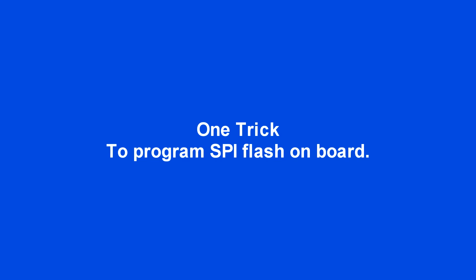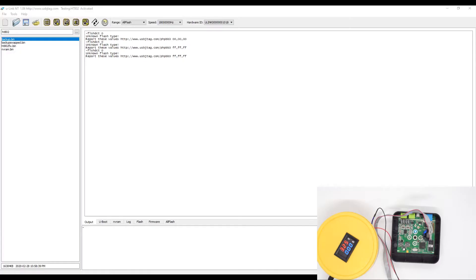This video talks about a small trick I use to program SPI chip on HT802 VoIP device. When I apply the 3.3 volt directly to the SPI chip, I cannot get the flash detected.